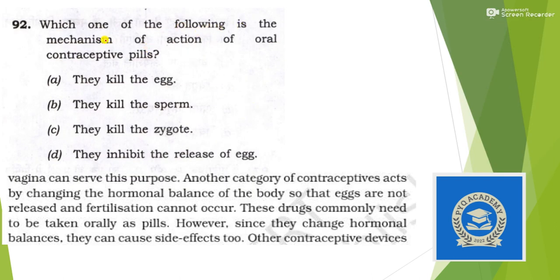Next: which one of the following is the mechanism of action of an oral contraceptive pill? This question is taken directly from NCERT. Another category of contraceptive acts by changing the hormonal balance of the body so that eggs are not released and fertilization cannot occur. These drugs commonly need to be taken orally. That means oral pills inhibit the release of eggs — this should be our answer.